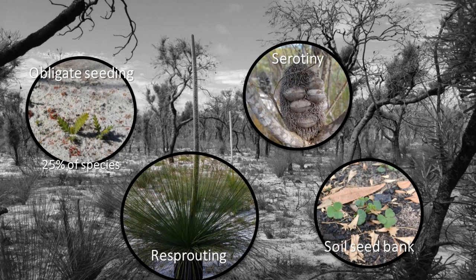Within both the re-sprouting and obligate seeding classifications, species can develop soil or canopy seed banks. Serotiny is the term we use to describe plants with canopy stored seed banks, such as many banksias. Species that develop a soil seed bank often have some form of seed dormancy to help time germination to coincide with the environment following fire, where light, water and nutrients are more available because fire has helped to cycle many of the nutrients held in plants back into the soil and because vegetation is more open and there is less competition for those available nutrients.